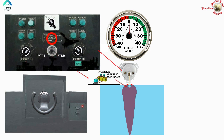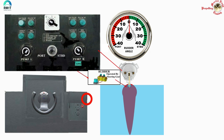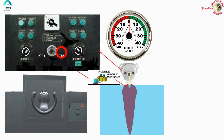Now let me show you the non-follow-up mode. I put the control to non-follow-up - position one. Something very important to remember: in non-follow-up mode, this wheel has got no control over the rudder. Whatever direction you turn the wheel, it has no effect on the rudder, because the wheel is not giving any command to the rudder. The joystick is the one which is going to control the non-follow-up operation.